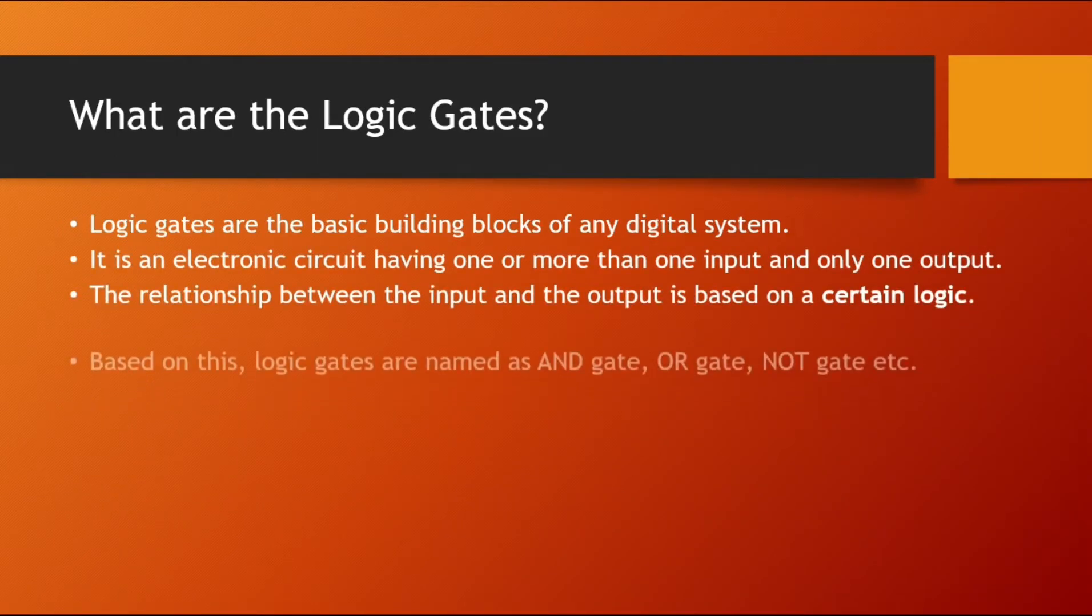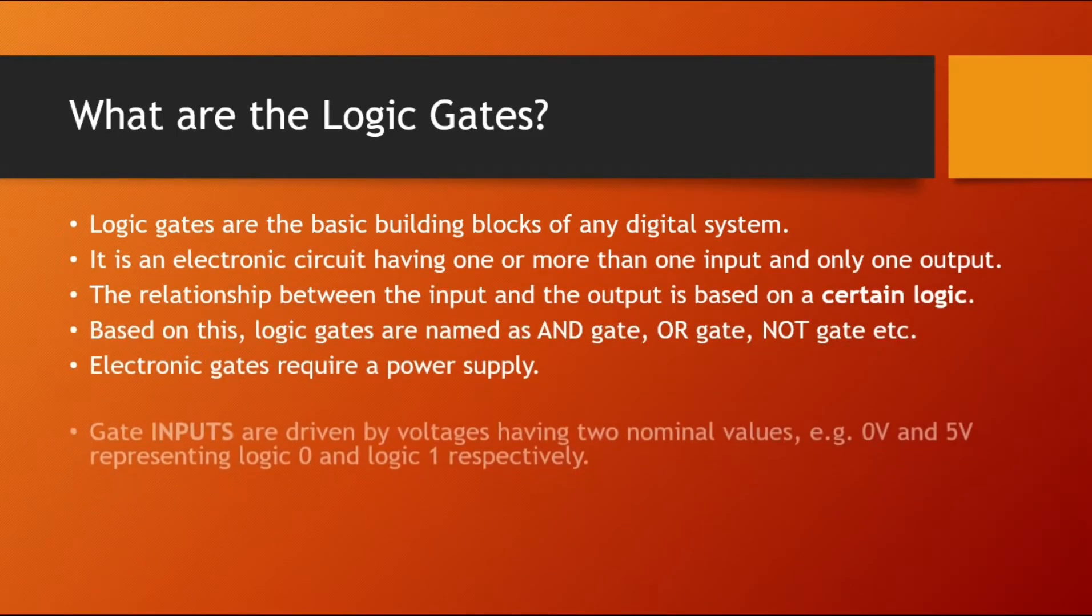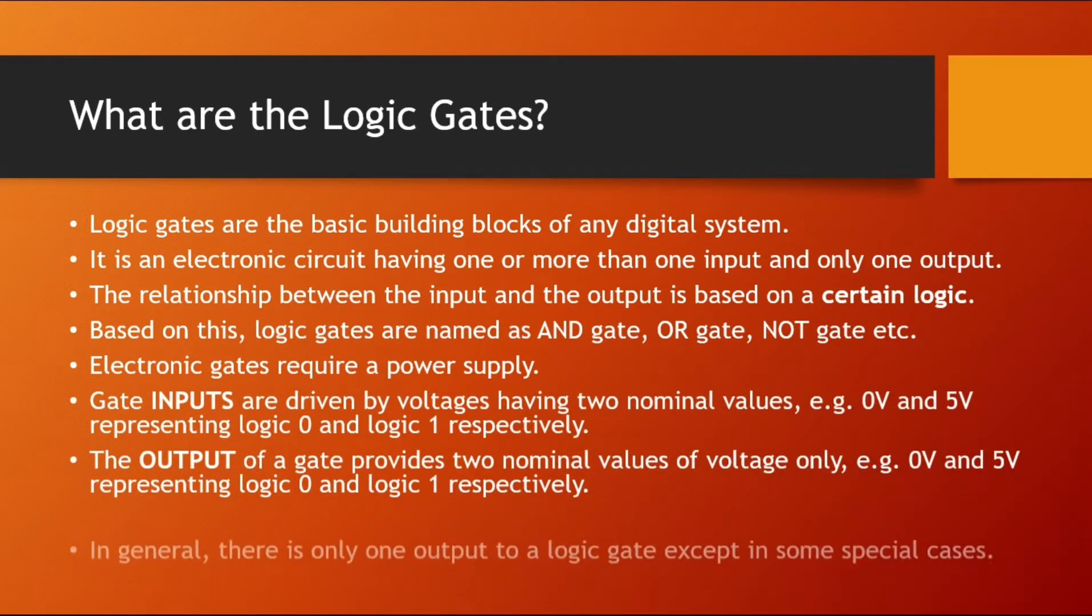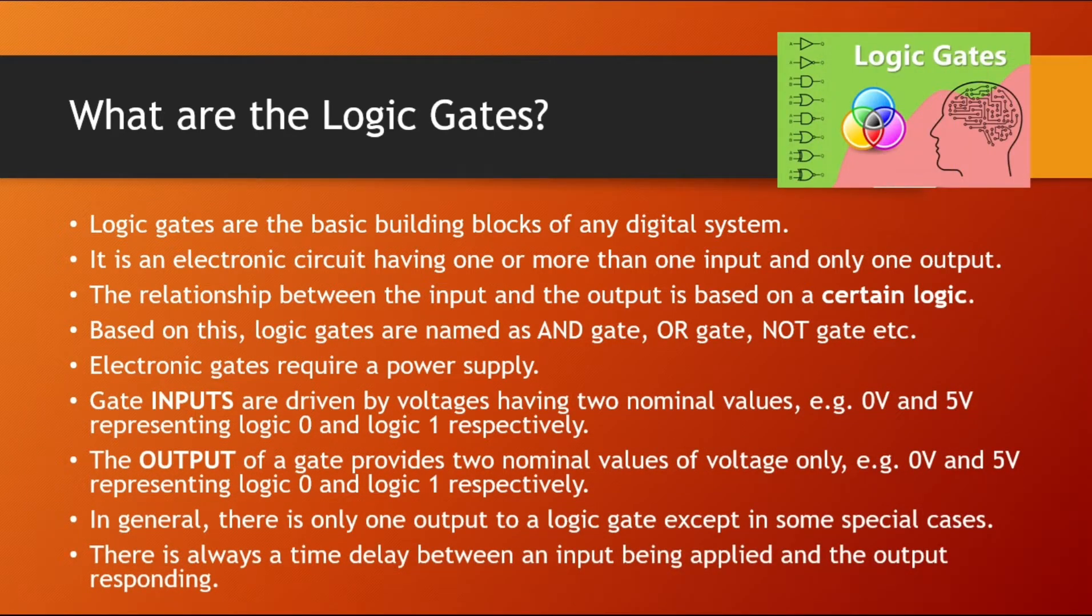Logic gates are basically the building blocks of any digital system. They are basically the electronic circuits which have one or more than one input and one output. It is not necessary that they should have one output always. They can have multiple outputs as well. But the relationship between their inputs and output is based on certain logic. And that logic makes the different gates like AND gate, OR gate, NOT gate, etc.